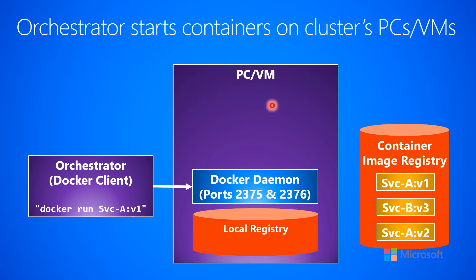The request comes in to the daemon. The daemon then looks in the local registry to see if the image you want to start — Service A v1 — exists. In this case, it does not exist in the local registry since it initializes itself to being empty. So the Docker daemon goes and makes a call out to the external container image registry service, saying it's looking for Service A v1. That container image then downloads across the wire into the VM and is placed into the local registry. Now that image is on the machine, but it's not in a running container yet — just the image has been placed into the local registry.